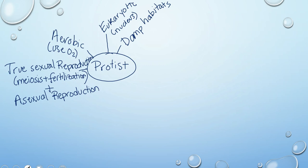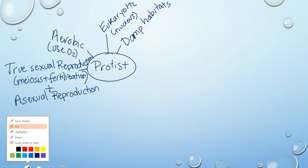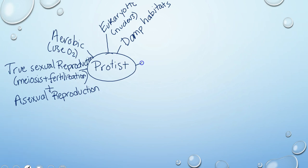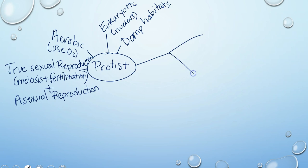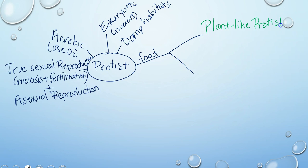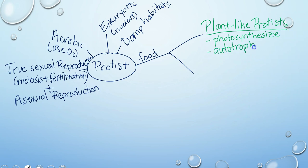What makes protists different is the great amount of diversity within the kingdom. One thing that makes them different is how they get their food. Our first branch is our plant-like protists. These protists are photosynthesizers — we often call them autotrophic, which means self-feeding. They are commonly known as algae and include things like diatoms, seaweeds, and dinoflagellates.